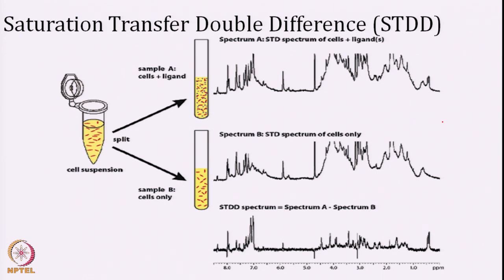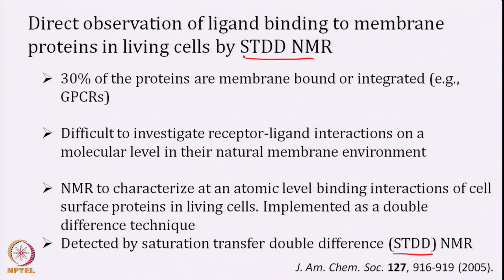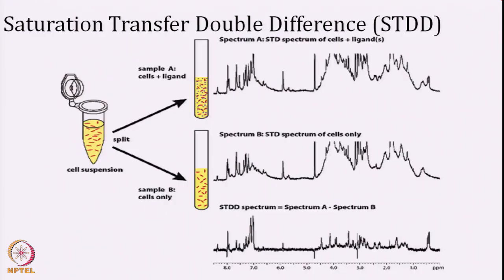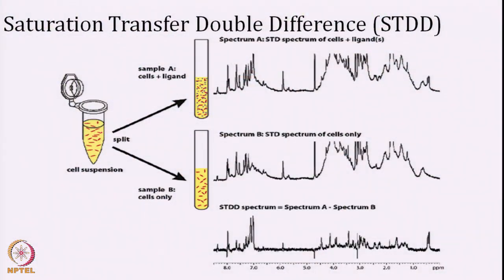The saturation transfer double difference experiment is simple. This method was developed by the Meyer group in Germany and published in JACS about 14 years ago. What you do is take a cell suspension and split it into two. You have on-resonance and off-resonance where you have cell suspension containing the membrane-embedded protein or protein expressed on the cell surface. You split into: sample A with only cells, and sample B with cell plus ligand.